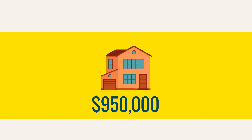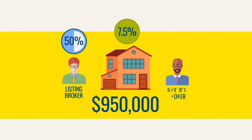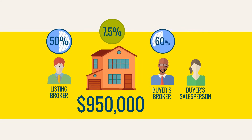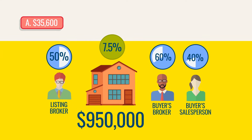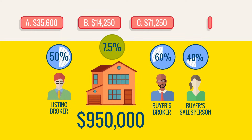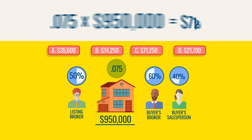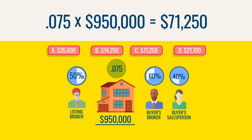Practice question number two. A house sold for $950,000 with a sales commission rate of 7.5%. The listing broker receives 50% of the total commission and the broker representing the buyer receives 50%. How much would the salesperson representing the buyer receive if the broker kept 60% and gave 40% to the salesperson? A: $35,600. B: $14,250. C: $71,250. D: $21,700. First, figure out the total commission — 7.5% of $950,000. Converting: 0.075 times $950,000 equals $71,250.